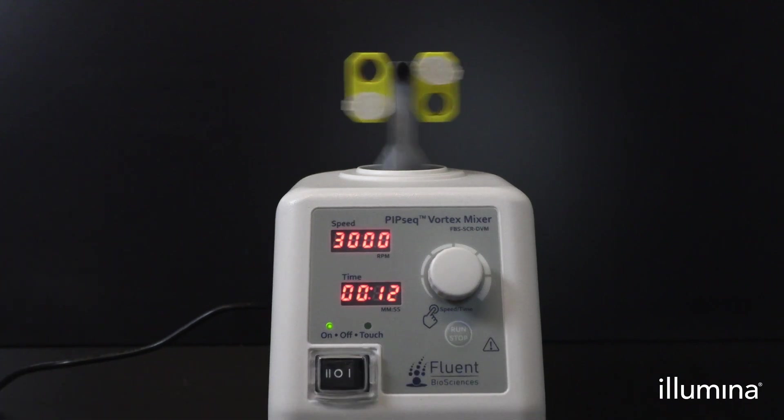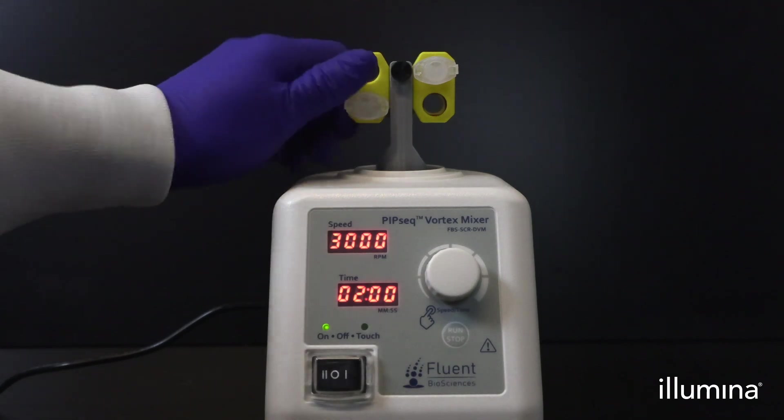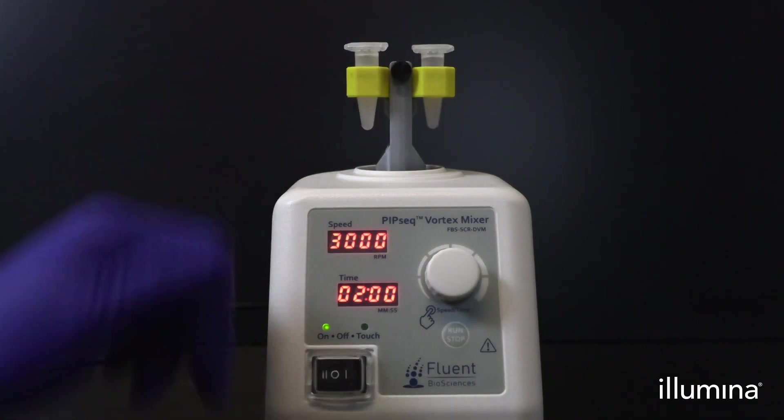Samples will be vortexed for 15 seconds in the horizontal configuration, followed by 2 minutes in the vertical configuration at 3000 rpm.